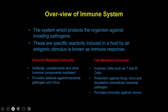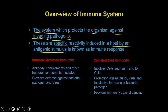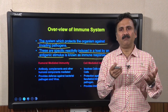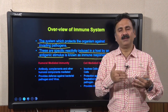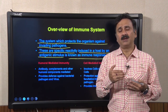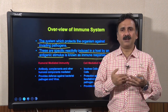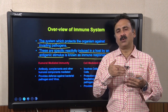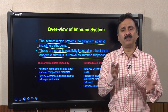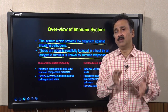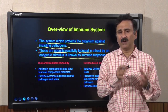The immune system protects the organism against invading pathogens. The specific reactions induced in a host by an antigenic stimulus are known as the immune response. Once a foreign antigen such as bacteria, virus, or fungus enters the host, the immune system recognizes it as non-self and in response, exerts reactions to destroy these foreign organisms. Collectively, all responses developed against a foreign antigen are known as the immune response.